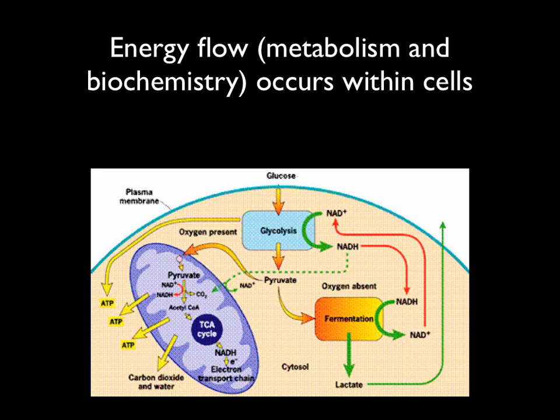Energy flow, metabolism, and biochemistry occur in the cell. Even though we like to think of ourselves as having our own particular metabolism as a single multicellular organism, it's actually the metabolic activity of individual cells that brings that about. For example, this diagram shows how a cell can bring in glucose and through a really complicated chemical reaction use that glucose to produce energy. Every single cell in your body is doing this at a pretty constant rate, and if it ever didn't happen that way, your metabolism would be zero and you'd be dead — unless you're some kind of robot.